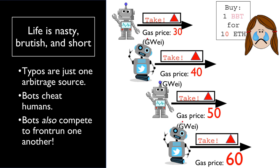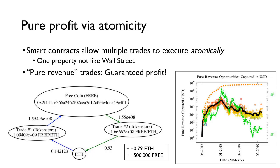Unfortunately, Bob is not alone in this. What we will show in this talk is that a whole ecosystem of bots like Bob compete on the blockchain, bidding up transaction fees in order to attempt to exploit and front-run inefficiencies in decentralized markets and profit from users like Alice. However, typos are just one possible source of arbitrage opportunities and bot revenue.